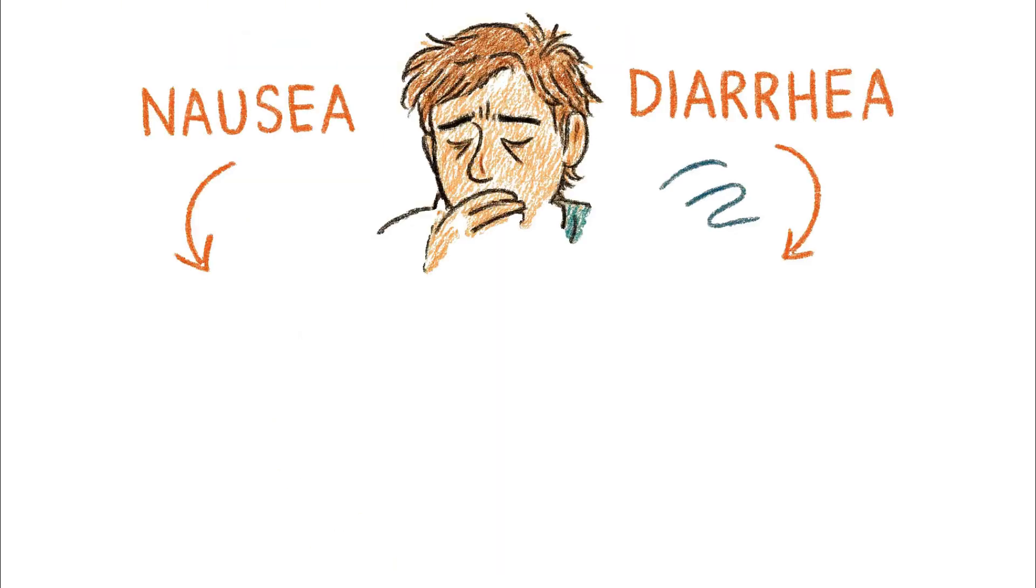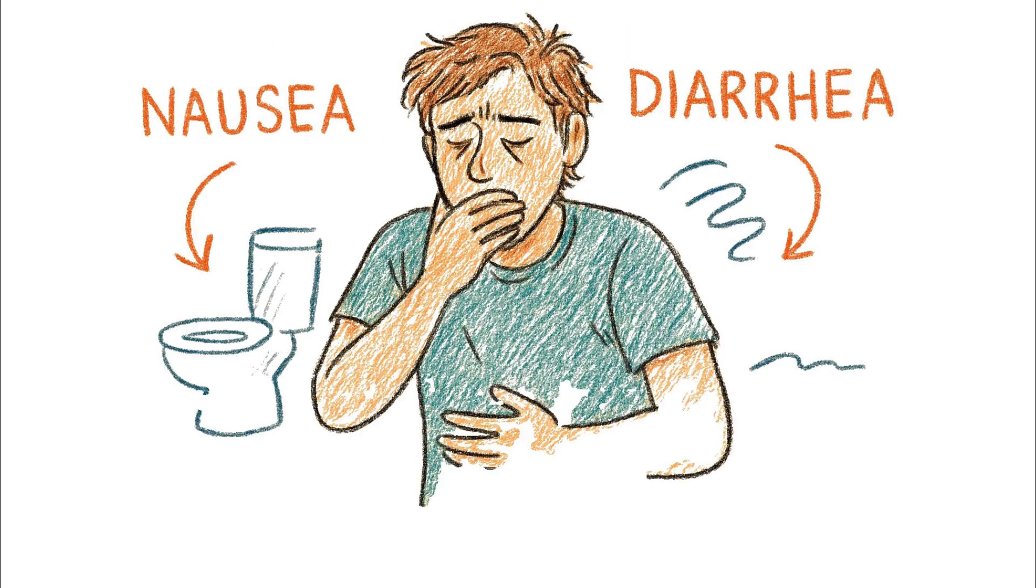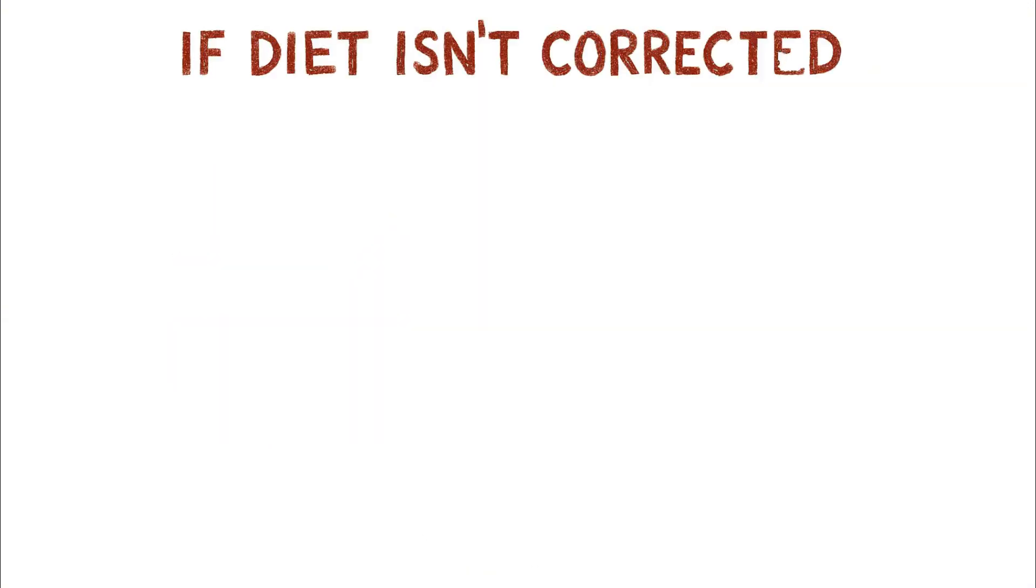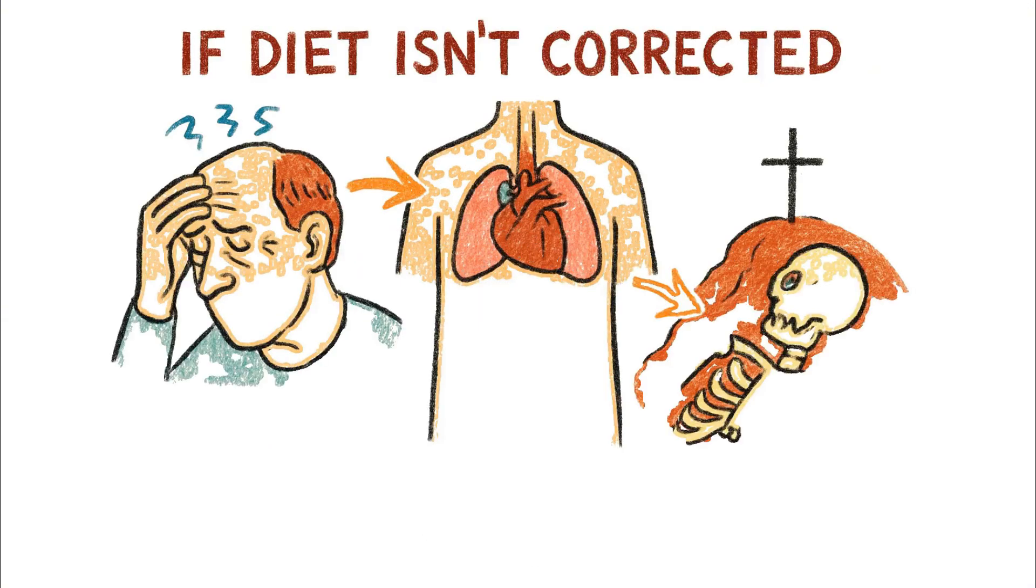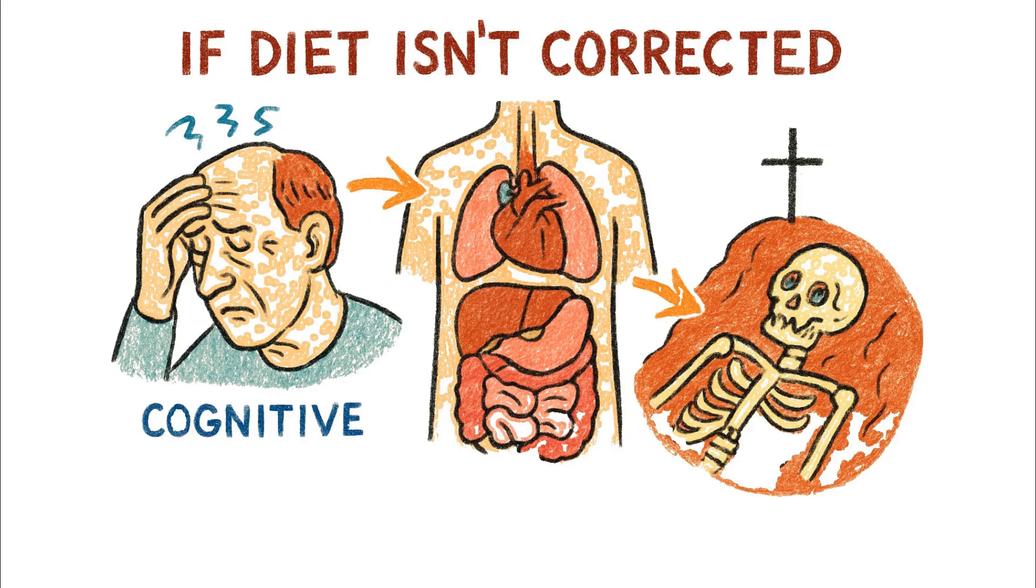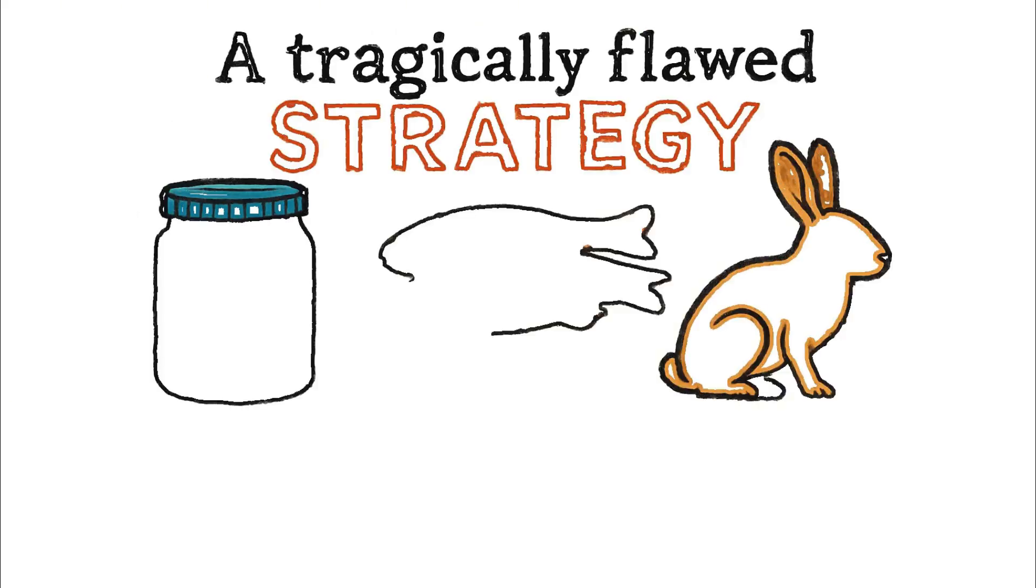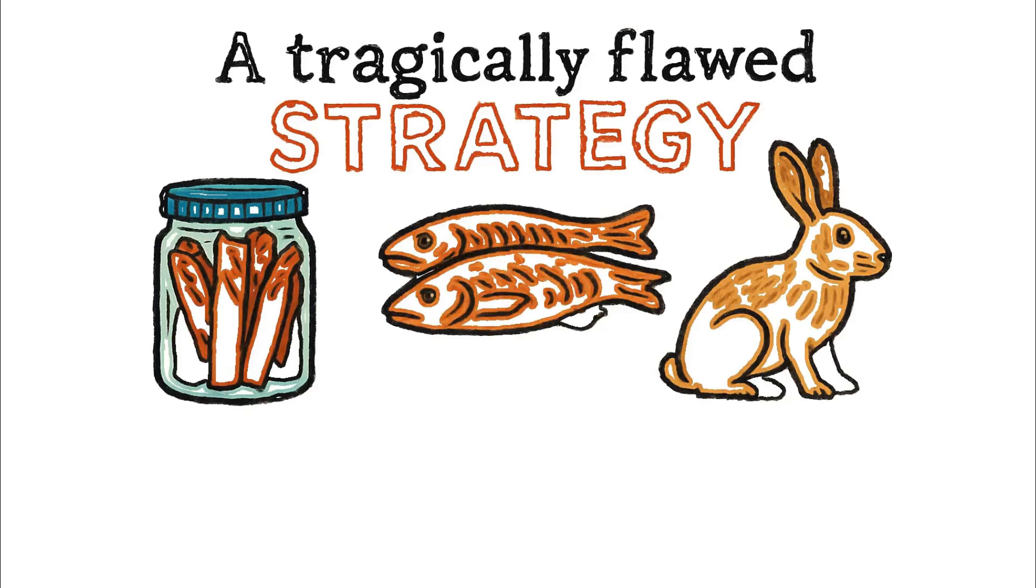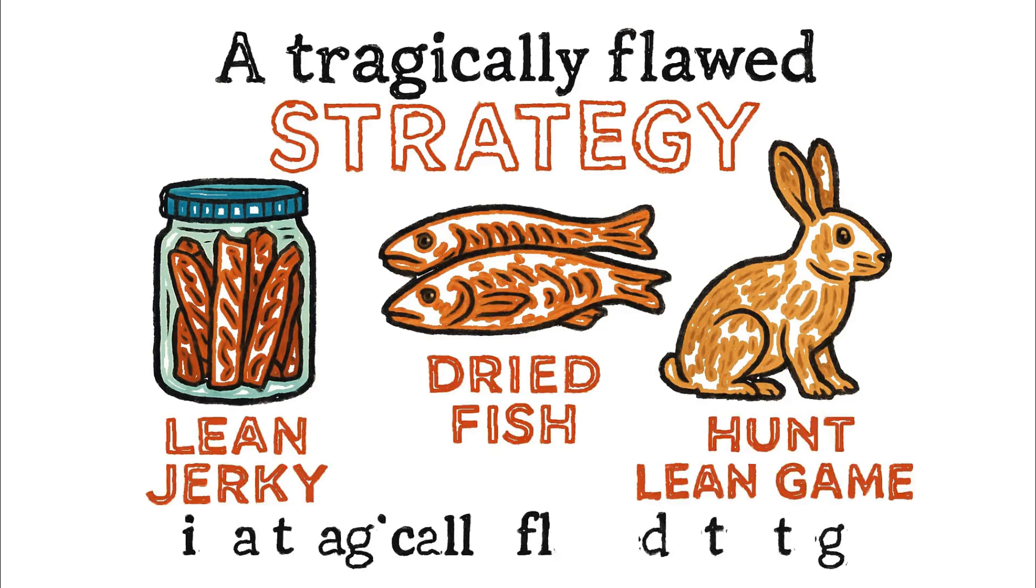The initial symptoms are nausea, diarrhea, and a deep fatigue that no amount of rest can cure. If the diet isn't corrected, it leads to cognitive decline, organ failure, and eventually, death. This is why a stockpile consisting solely of lean jerky, dried fish, or plans to hunt lean game like rabbit is a tragically flawed strategy.